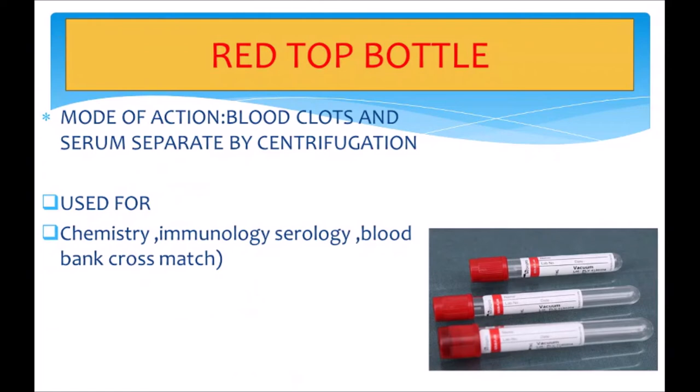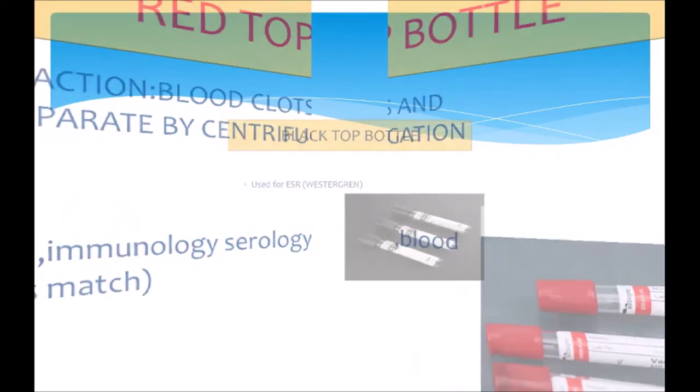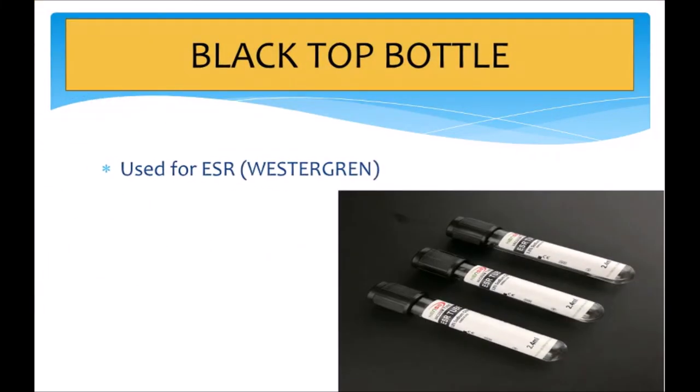Next is the red top bottle. In the red top bottle, blood clots and serum are separated by centrifugation. It is generally used in chemistry, immunological, serological tests, and blood bank cross-matching. There is no anticoagulant present in the red top bottle.